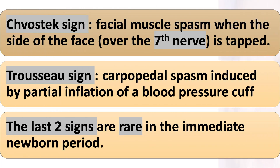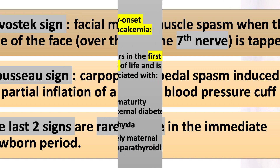Additional signs include laryngospasm, Chvostek's sign — facial muscle spasm when the side of the face over the 7th nerve is tapped — and Trousseau's sign — carpopedal spasm induced by partial inflation of a blood pressure cuff. The last two signs are rare in the immediate newborn period.